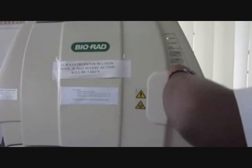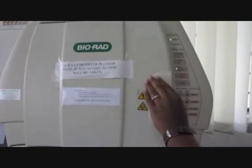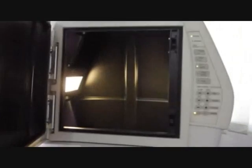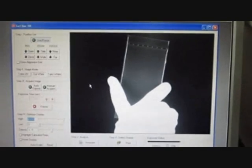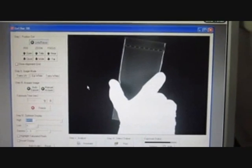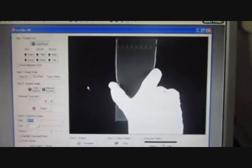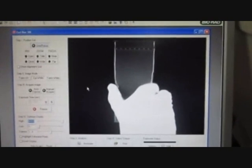If the position of the gel on the stage is not proper, this can be adjusted by opening the upper door on the imager. The gel can be moved to appropriate position on the stage by hand. Make sure that the trans UV light is not switched on when you place your hand inside the imager.